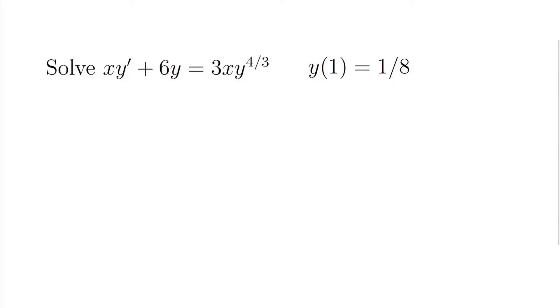Now the first thing I'm going to notice about this equation is it looks like a Bernoulli equation because I have this 4 thirds sitting up in the power, right? It's a rational power. And so I'm going to divide both sides of the equation by x to get it in the standard form. y prime plus 6 over x y is equal to 3y to the 4 thirds. And you can see this is a Bernoulli equation with the power n being 4 thirds.